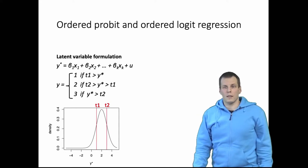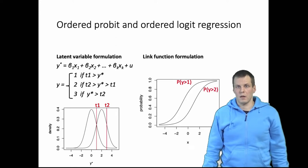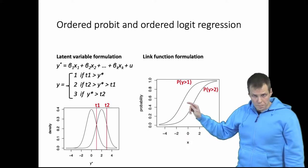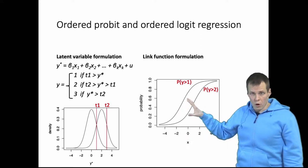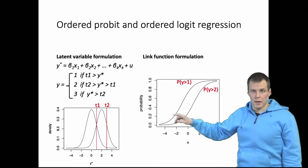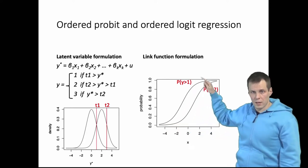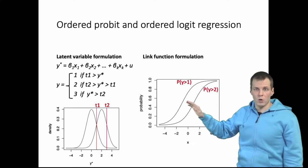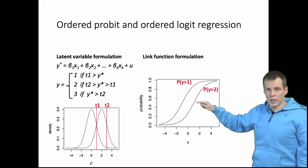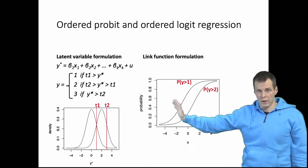Another way of looking at this is the link function formulation. We estimate two logistic curves or two probit curves that only differ in their intercept. The first curve tells us the probability of observing a value of at least one, and the second curve tells us the probability of observing a value of at least two. These curves differ only in their intercept.